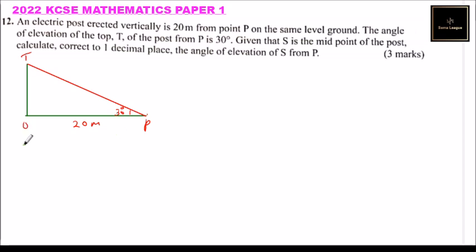So this is the top of the post. We can say this is the ground. Then we are told that there is another line there where we have point S, which is the midpoint of our post OT. And we are required to find the angle of elevation.